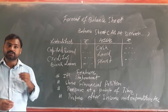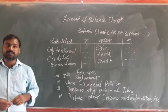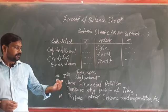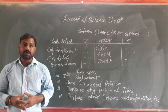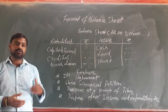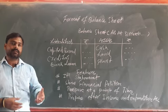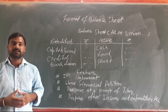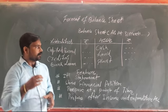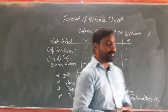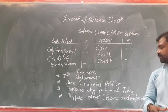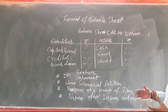The income and expenditure account shows the deficit and surplus of the organization. After preparing the income and expenditure account, a balance sheet is prepared which shows the total and entire financial position. Additionally, a balance sheet has two sides — liability side and asset side — and it presents a true picture and analysis of the organization.